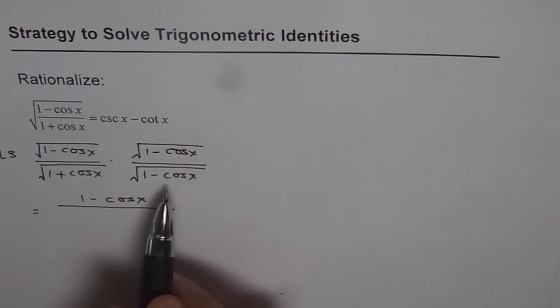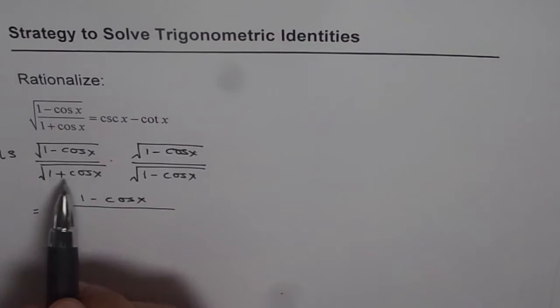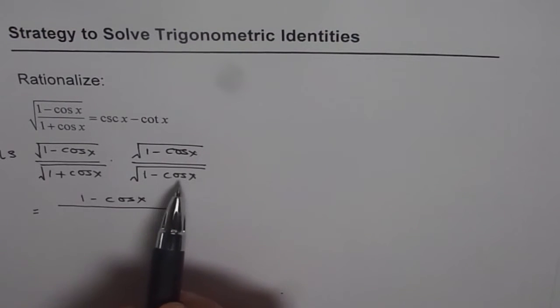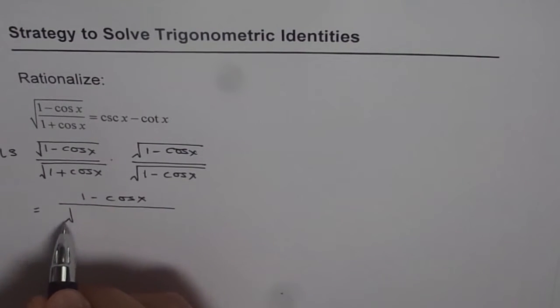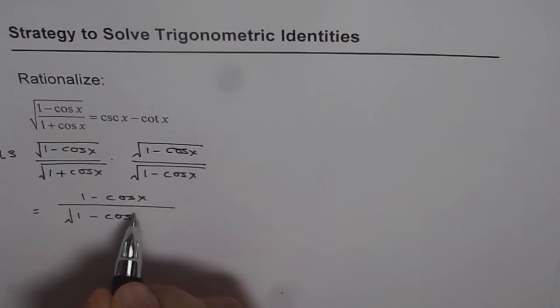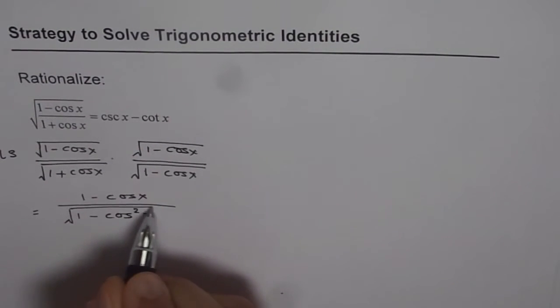As far as the denominator is concerned, it is a plus b times a minus b. So what do we get here? We get 1 minus cos squared x.